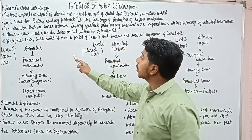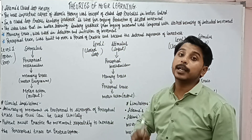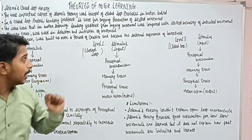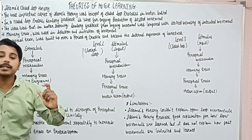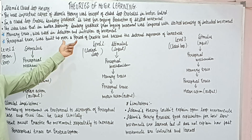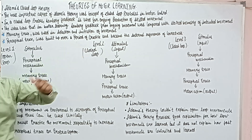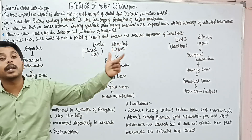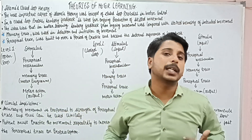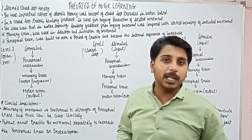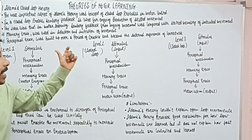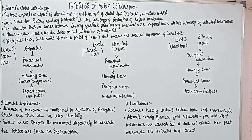Then, perceptual trace. It was built up over a period of practice — that is, the more we repeat the movement, the stronger it becomes. So it is the internal reference of correctness.